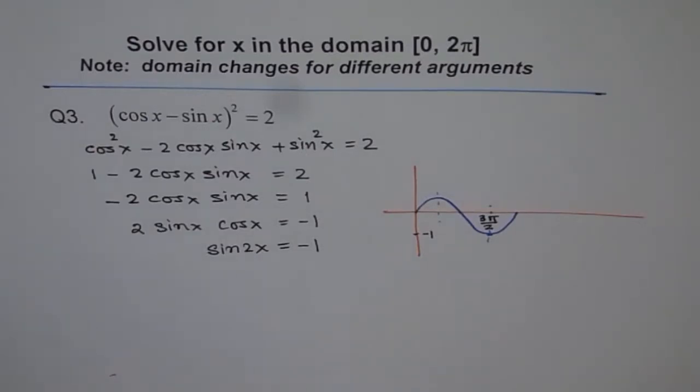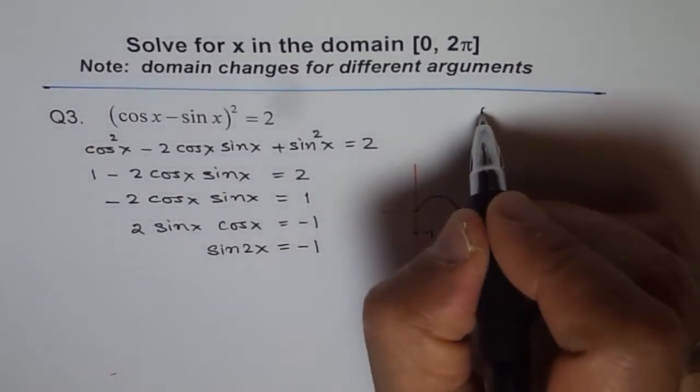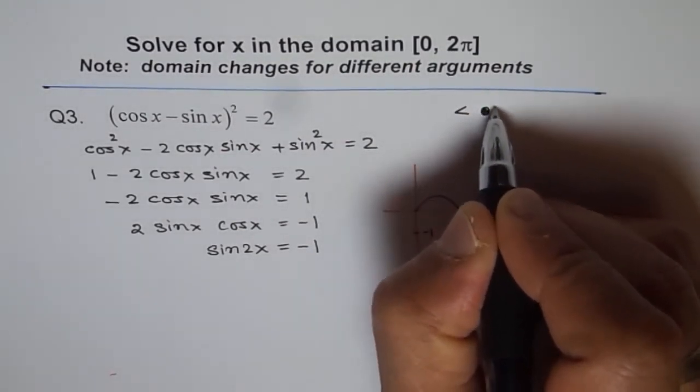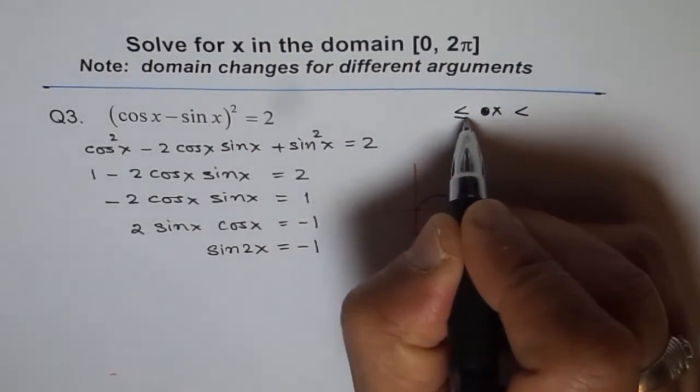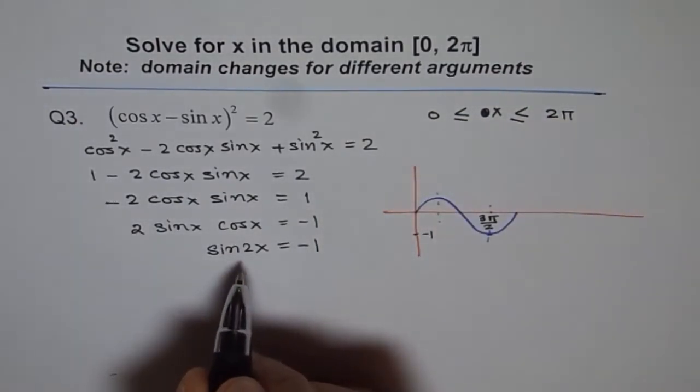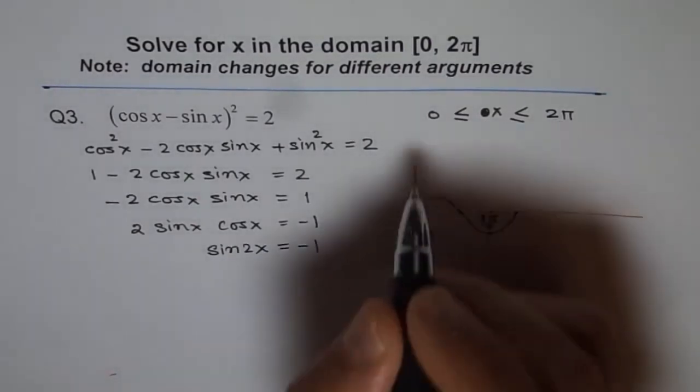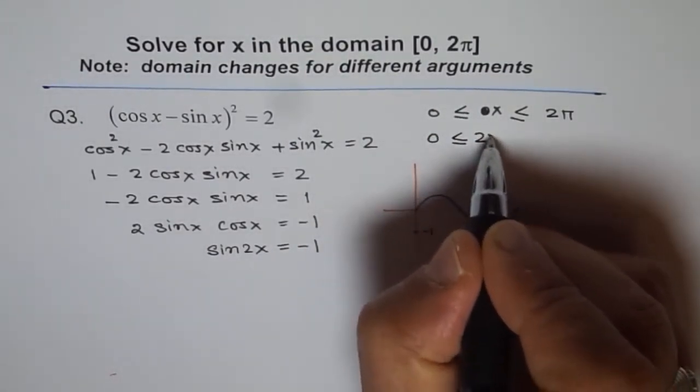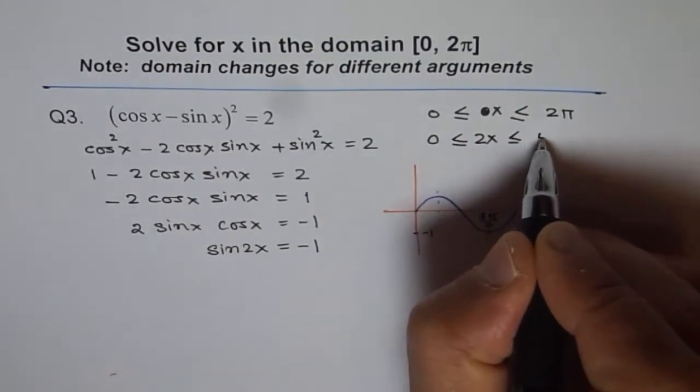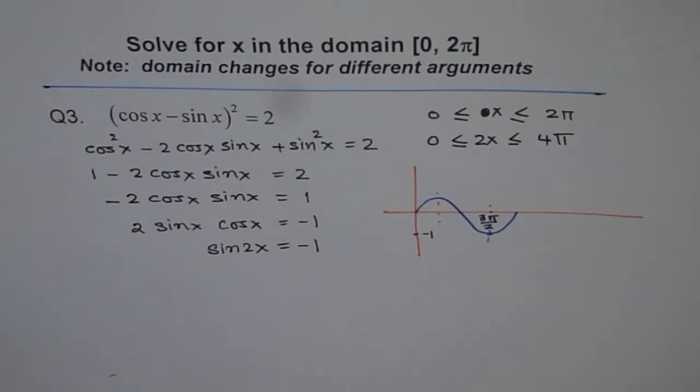Now we need to check our domain. The domain is for x greater than or equal to 0 and less than or equal to 2π. But here the argument is 2x, not just x. For 2x we need to multiply this by 2, so we get 0 ≤ 2x ≤ 4π.